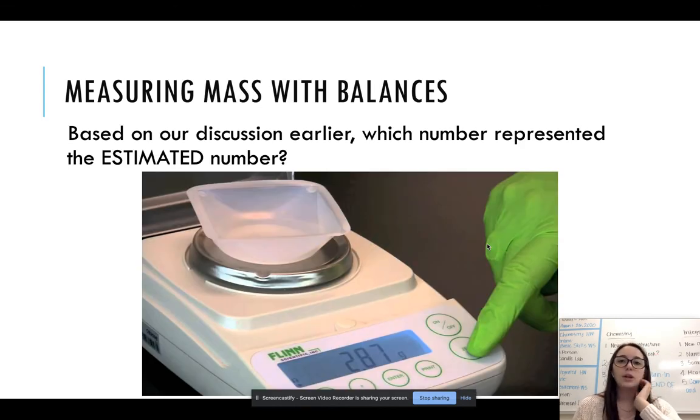Next, we're going to be measuring mass with balances. So based on our discussion earlier, which number represented is the estimated number? So take a moment to answer that. So when I look at my mass balance, it actually is the 2.87. The 7 is my estimated value. Because it's something that can change, especially when you're using a mass balance. Your balance might teeter on that number, because it's trying to estimate what the value would be, where it can for certain say that 2.8 is the mass. It's that second decimal. It's trying to evaluate an estimate.